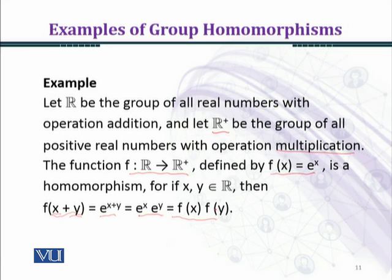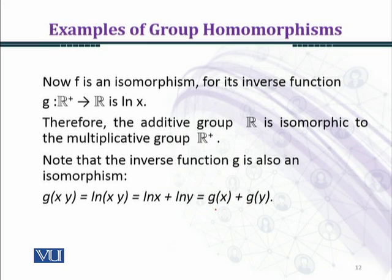So homomorphism property is satisfied. Now we have to check one-to-one and onto conditions. Now f is an isomorphism, for its inverse function g from ℝ⁺ to ℝ is ln(x). As you know that if we have any function and it is invertible, then it is bijective. So using this result you can see that g from ℝ⁺ to ℝ is defined by g(x) equal to ln(x).